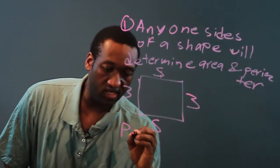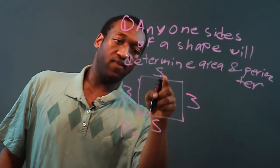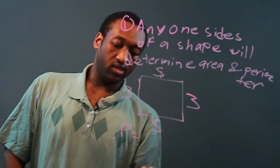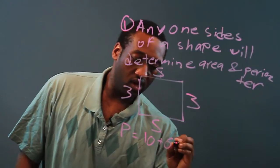The perimeter for this, adding up all the sides, five plus five is ten, and three plus three is six, so ten plus six would be sixteen.